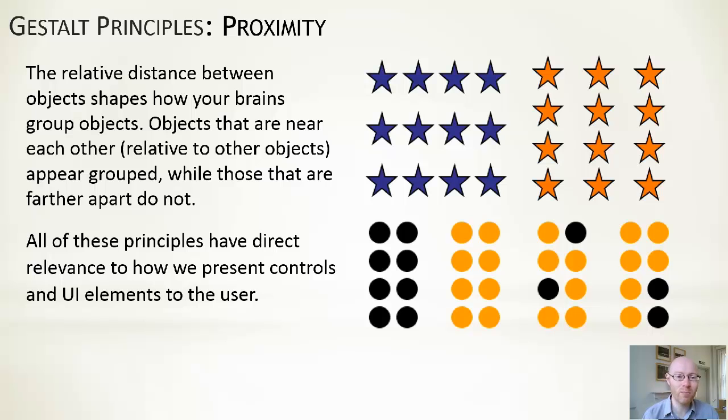So because the purple stars are more closely aligned on the x-axis, we group them along that axis. And for the orange stars, they're more closely aligned in the y-axis and more separation on the x. So again, that defines how we actually group them.